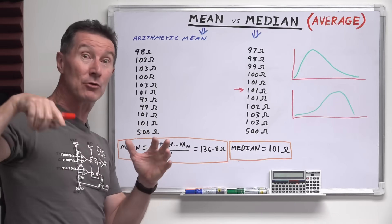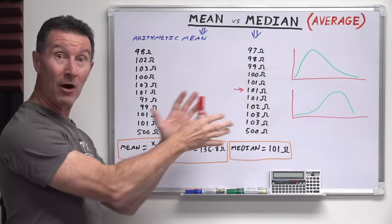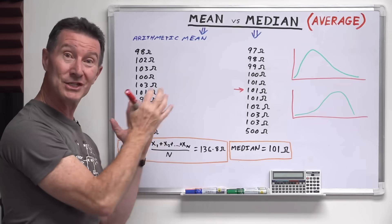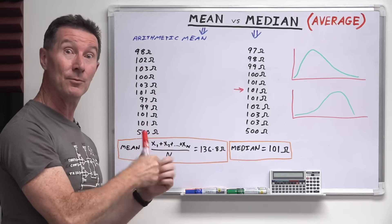You might have big spurious spikes right out there or something like that, then you might want to use the median just to take those out of the average value.